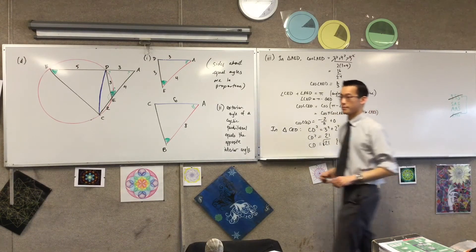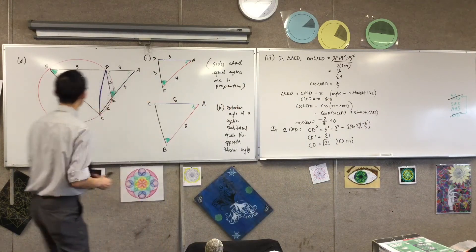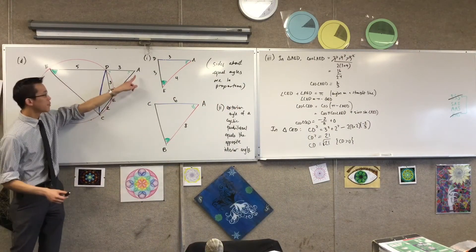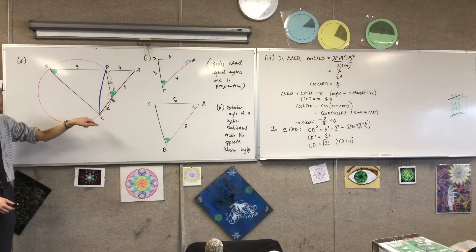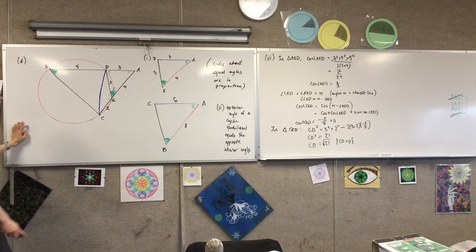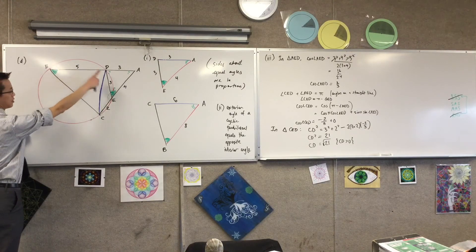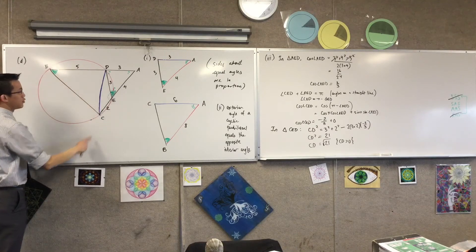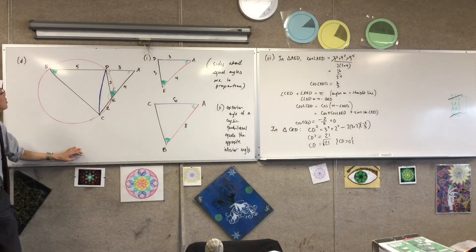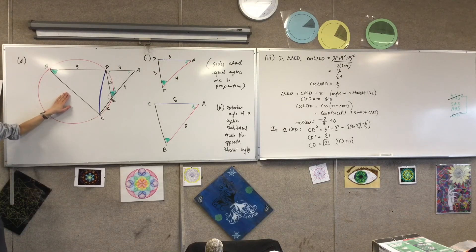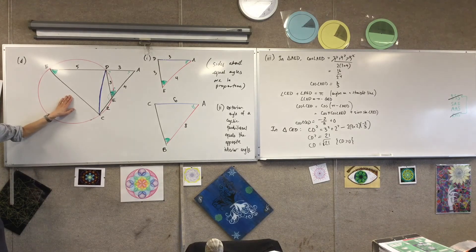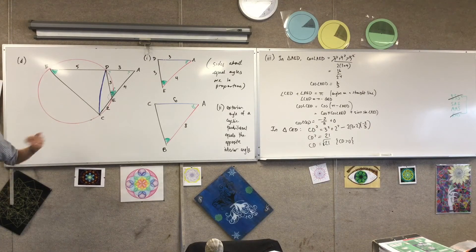Student: If angle DEA equals angle DBC, we can just use cosine in triangle BDC, so we don't have to solve all the way around. Teacher: You mean find this side using the cosine rule in triangle BDC? Yeah, yeah, that's fine. I feel like it would be a similar amount of work. One of the things about circle geometry questions is there are many, many ways around the circle, so that's okay.